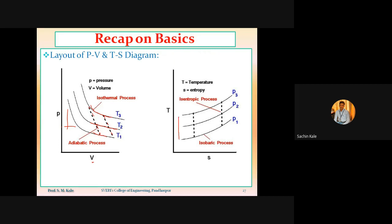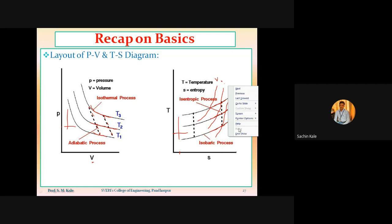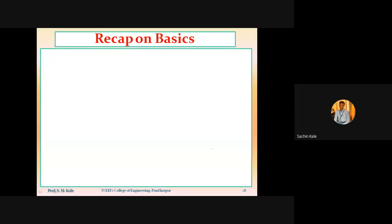On the TS diagram, a vertical line indicates constant entropy and a horizontal line indicates constant temperature. Constant pressure lines are curves parallel to each other. The constant volume line has a steeper inclination than the constant pressure line. Understanding this nature of lines makes it easy to draw any thermodynamic process on the PV as well as TS diagram.